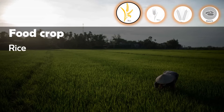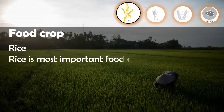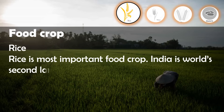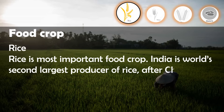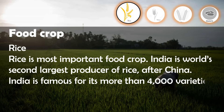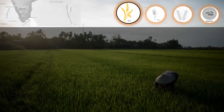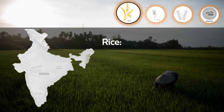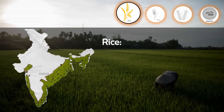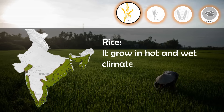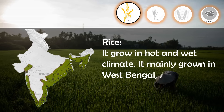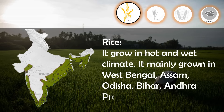Rice is the most important food crop. India is the world's second largest producer of rice after China, and is famous for its more than 4,000 varieties of rice. It grows in a hot and wet climate. It is mainly grown in West Bengal, Assam, Odisha, Bihar, Andhra Pradesh, and Tamil Nadu.